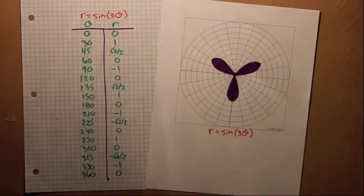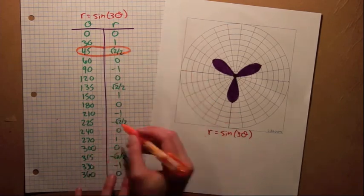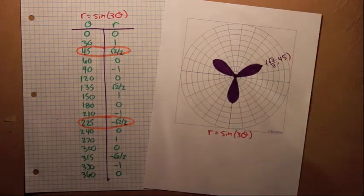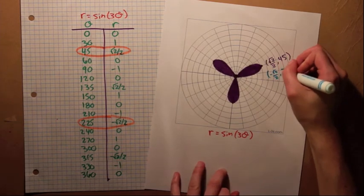If we look at how we graphed r equals sine 3 theta, some of the points on our graph overlap. For example, when theta is 45 and when theta is 225, the point in the same spot.